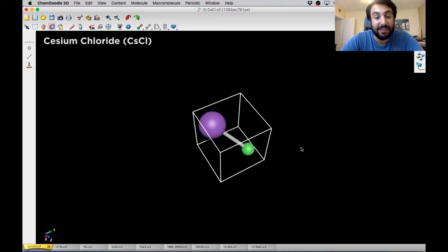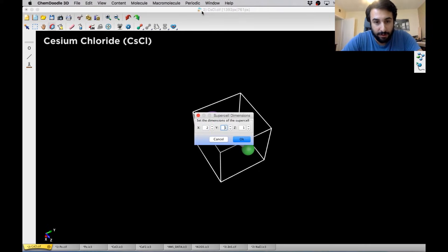So now we're looking at cesium chloride. We've got cesium ions, or Cs plus, in purple. We've got chloride ions, or Cl minus, in green. And let's see what happens if we build this out. Let's just go to two.